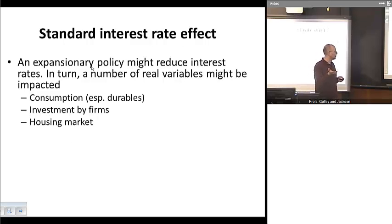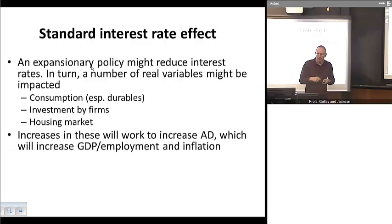And then maybe there might be a stimulative effect on the housing market. Lower mortgage rates would be correlated with an increase in demand for new housing. And that would work to increase investment as well. So in effect, what we'd see is all these factors working to increase aggregate demand, and this would tend to increase real GDP, increase employment, and also possibly increase inflation as well.